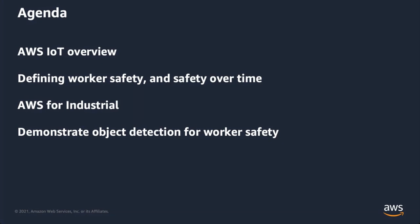We'll then go into a discussion around AWS for Industrial, which is a comprehensive offering made by AWS and our partners to help address all of the industrial use cases that customers have, with a focus on the worker safety aspect of how we can use AWS services to achieve a particular outcome. Then we'll demonstrate that, including a demonstration of object detection for worker safety.